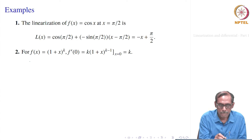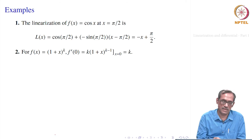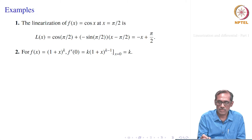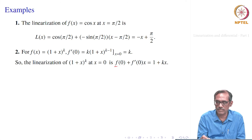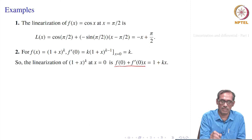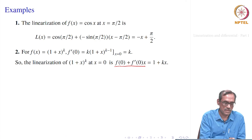Let us take another example: f of x equal to 1 plus x to the power k, where k is some natural number or even rational number. We find f prime of 0: it is k times 1 plus x to the power k minus 1, evaluated at 0, giving k. So the linearization at x equal to 0 is f of 0 plus f prime of 0 times x minus 0, which simplifies to 1 plus k x. Thus 1 plus k x is the linearization of 1 plus x to the power k. This matches the first two terms from the binomial theorem.